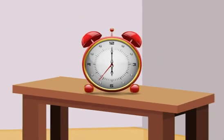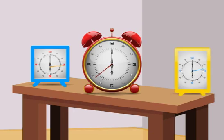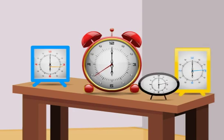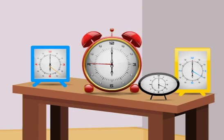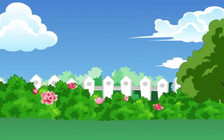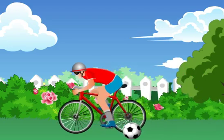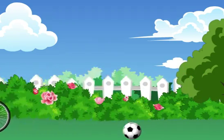You must have seen clocks of shapes like square, rectangle, and oval. But you can never find a gear which has a shape other than a circle. Without these gears, this clock cannot work. Circle — such a simple shape, but how great its importance is.